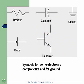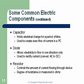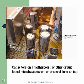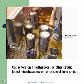Some common electrical components: a capacitor holds an electric charge for a period of time and is used to create an even flow of current on a PCB — it dampens changes by storing voltage. A diode allows electricity to flow in one direction only, used to rectify AC to DC. A resistor controls the amount of current flow, and can be varied by increasing or decreasing its resistance. Here are examples of capacitors in cans; capacitors on the motherboard often have embedded crossed lines at the top.